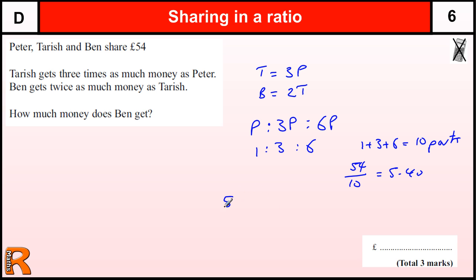So Peter gets £5.40. We don't actually need to work out what Tarish gets, we just want to know what Ben gets, but it might help to do Tarish first. So we've got three lots of £5.40.